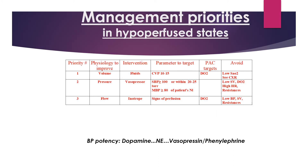Priority number one is to improve volume. Intervene with fluid, and target parameters include CVP and oxygen delivery. A chest X-ray may also be indicated.